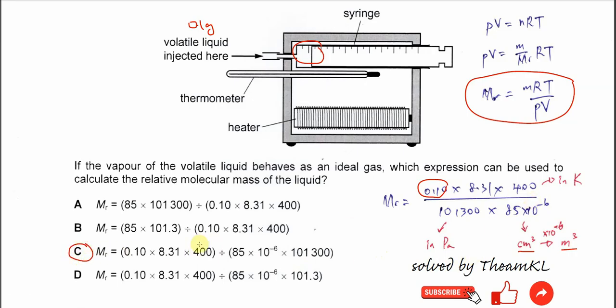So it's the same as this: 0.1 times 8.31 times 400 over 101300, and over 85 times 10^-6. Okay, that's all. Thank you.